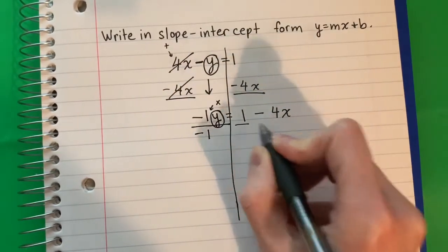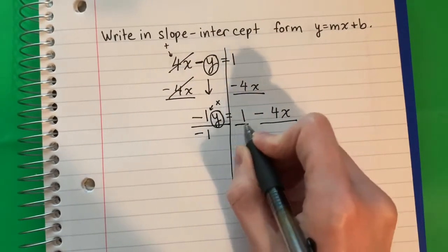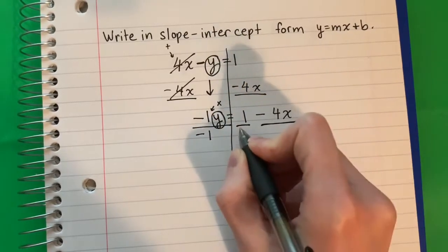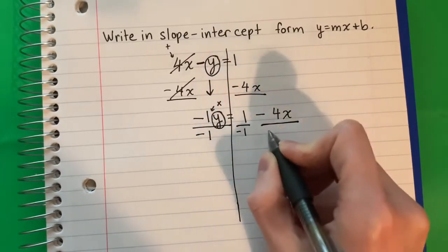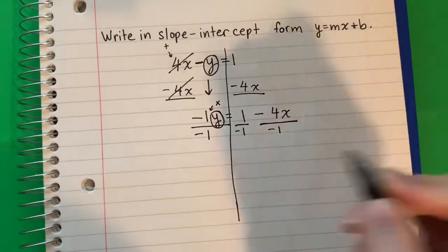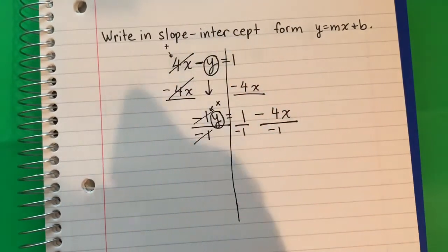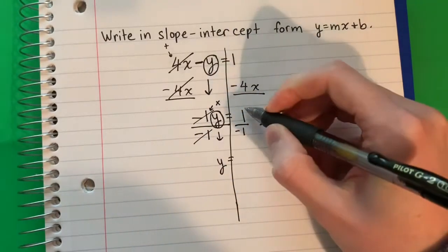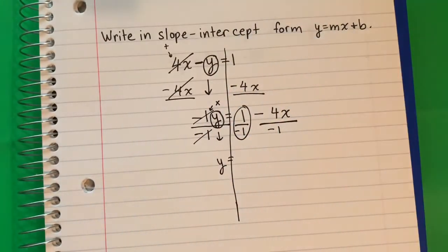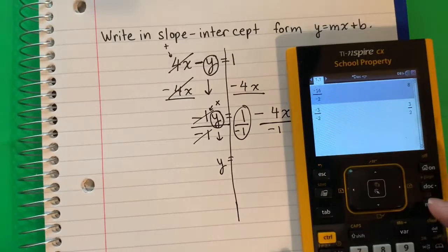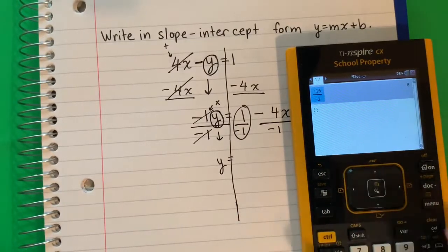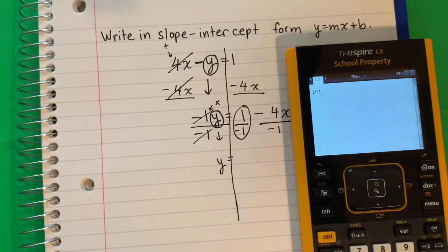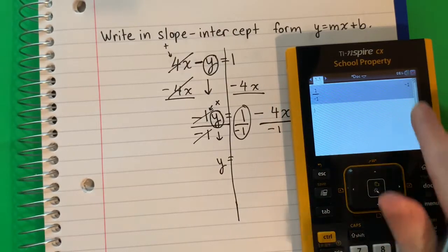Each part here I'm going to divide by negative 1. Negative 1 divided by negative 1 is 1 — it cancels. And I'm going to copy down y equals. I'm going to put in the calculator first: 1 divided by negative 1. That is negative 1.